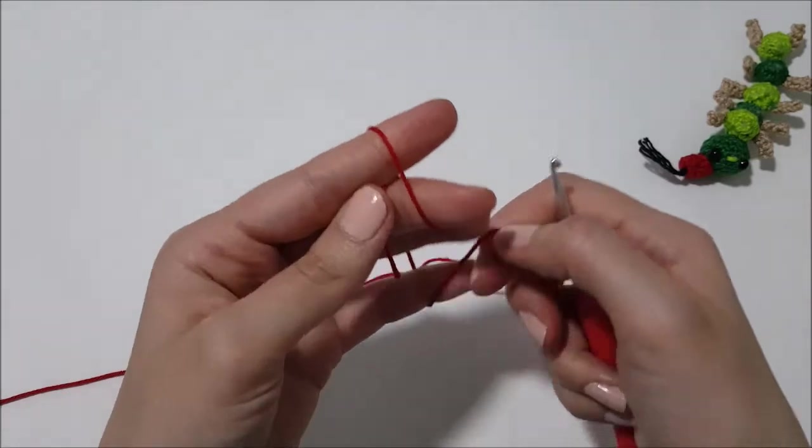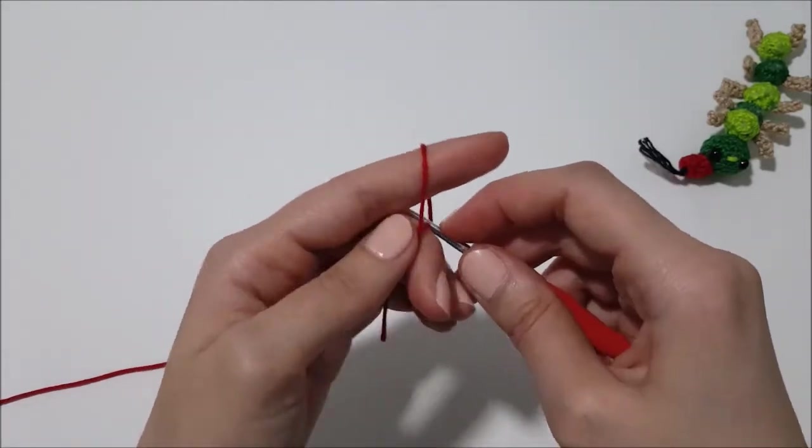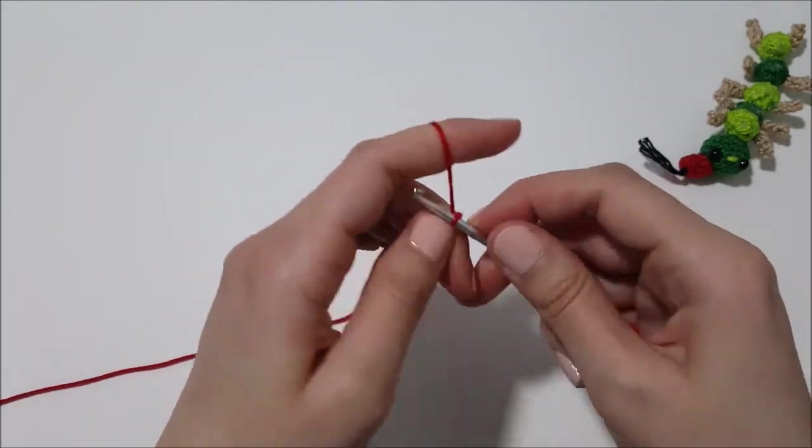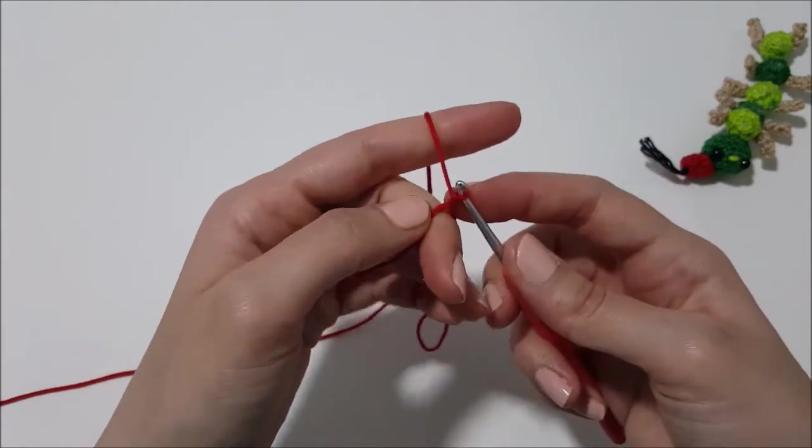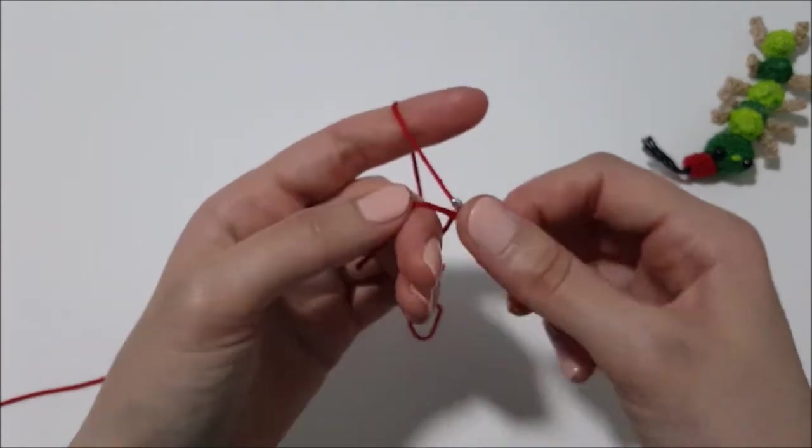Row 1 is a magic ring of 8 single crochet. This is the slip stitch, it is not counted because I tightened the loop.